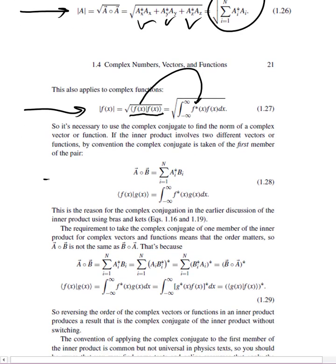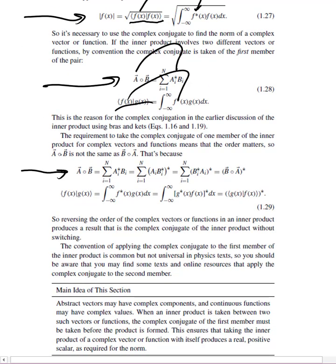It also works if you have two different vectors or functions. For a·b, the inner product between a and b, notice the first one gets the complex conjugate. For the inner product of f and g, f gets complex conjugated. This does have one interesting result: if you take a·b and make the complex conjugate, the result equals the complex conjugate if you reverse the order — that would be b·a. So you have to pay attention to the order, since you take the complex conjugate of the first member. If you switch that order, you get the complex conjugate of the result you would have gotten had you not switched the order.